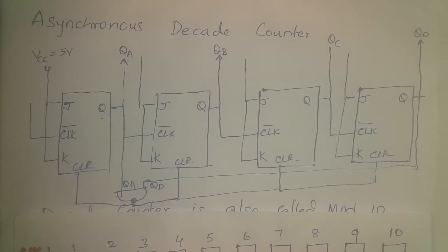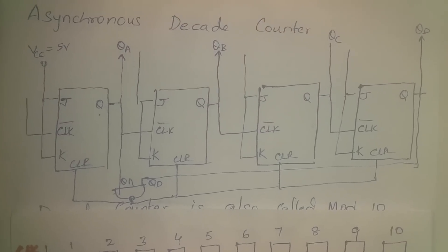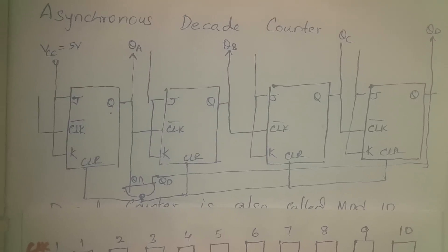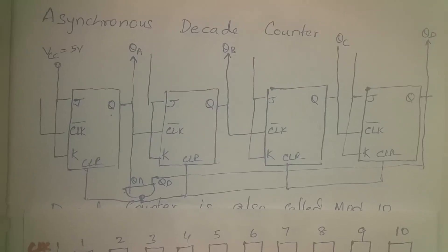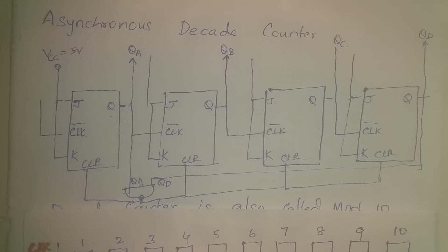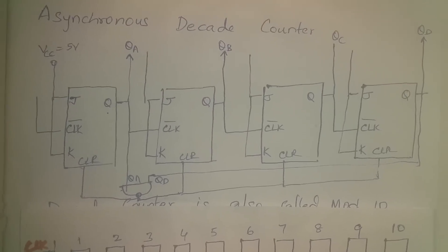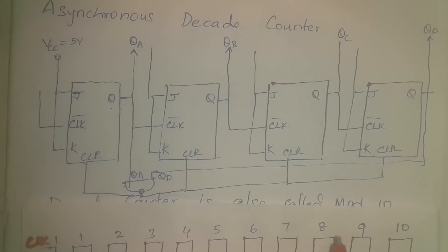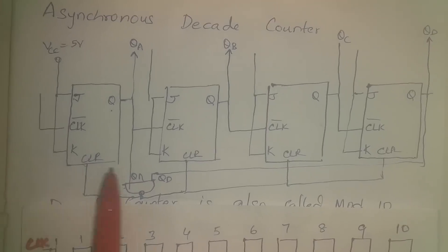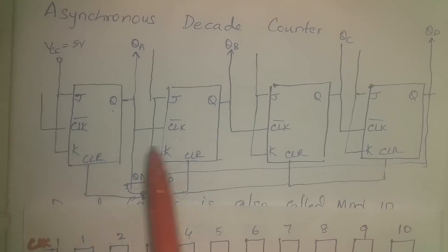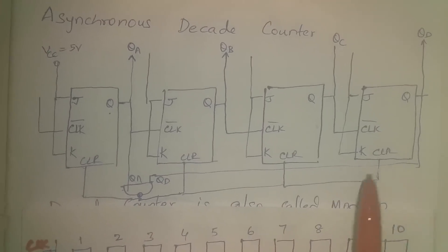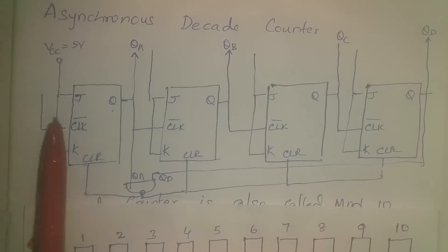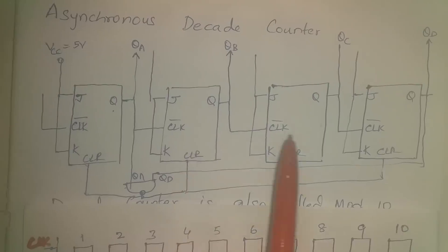To determine the number of flip-flops required: since 2^3 = 8 is not sufficient to count 10 states, we go to the next power — 4 flip-flops. With 4 flip-flops you can count 2^4 = 16 states, but we need only 10. So after counting 9, the counter should reset.